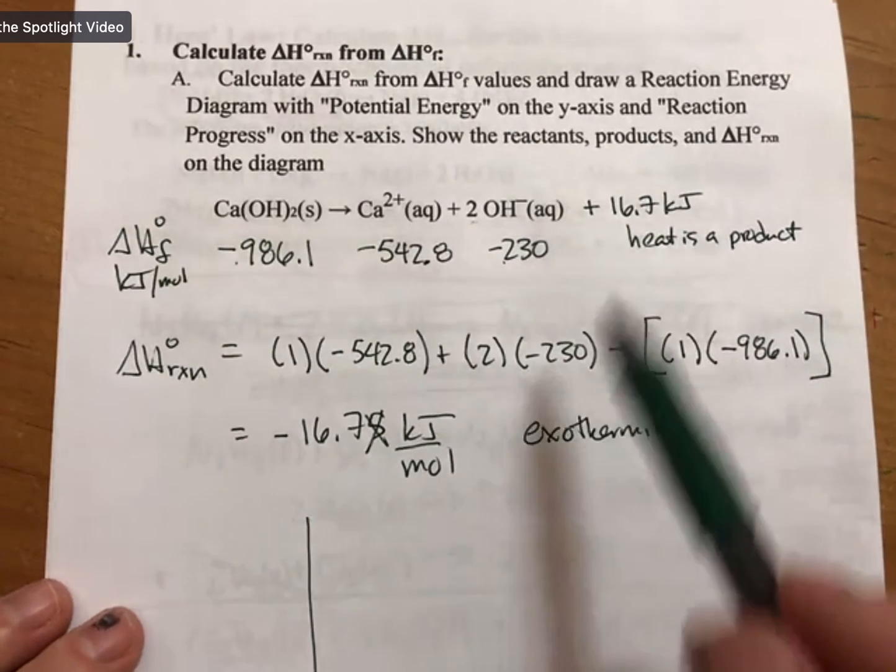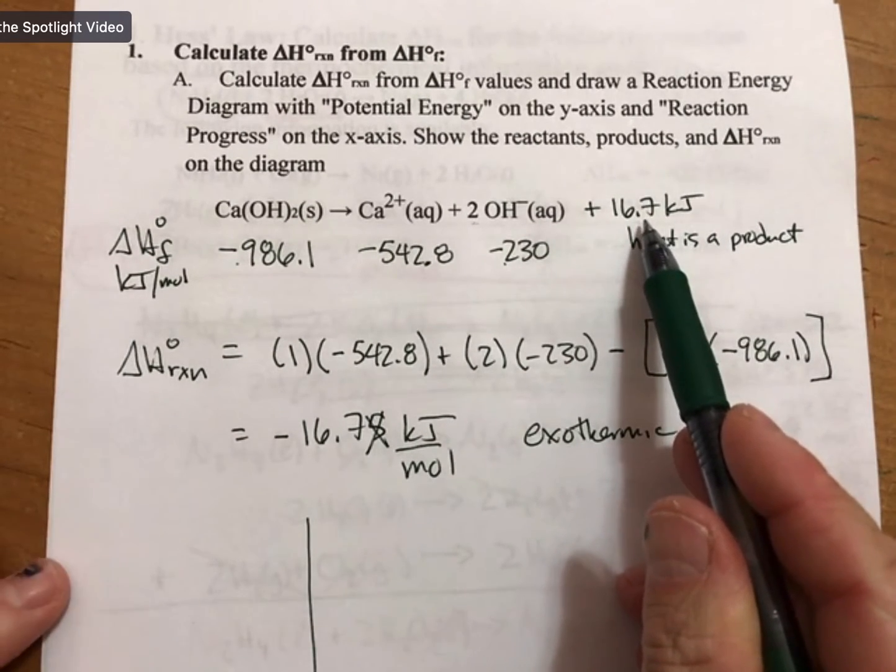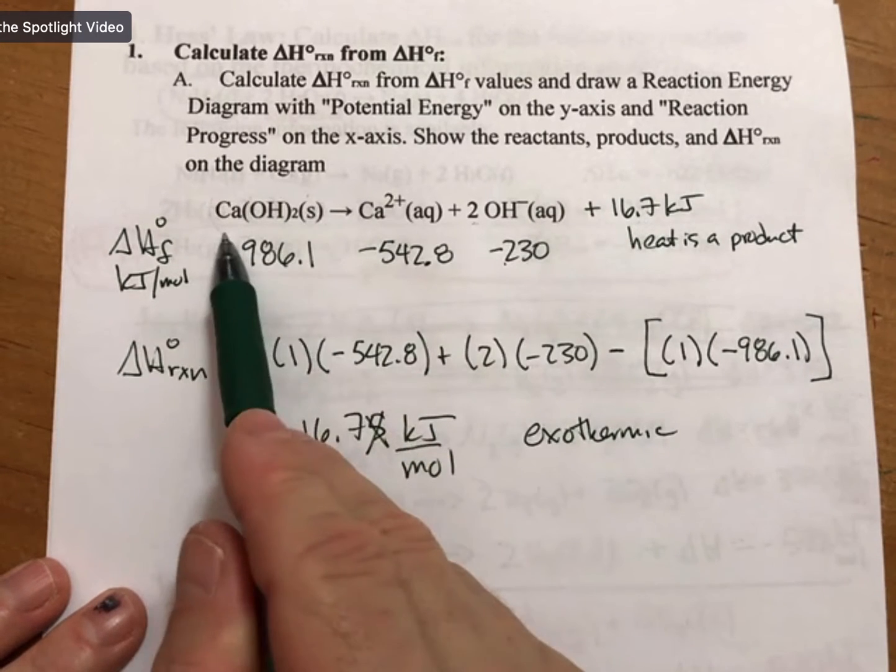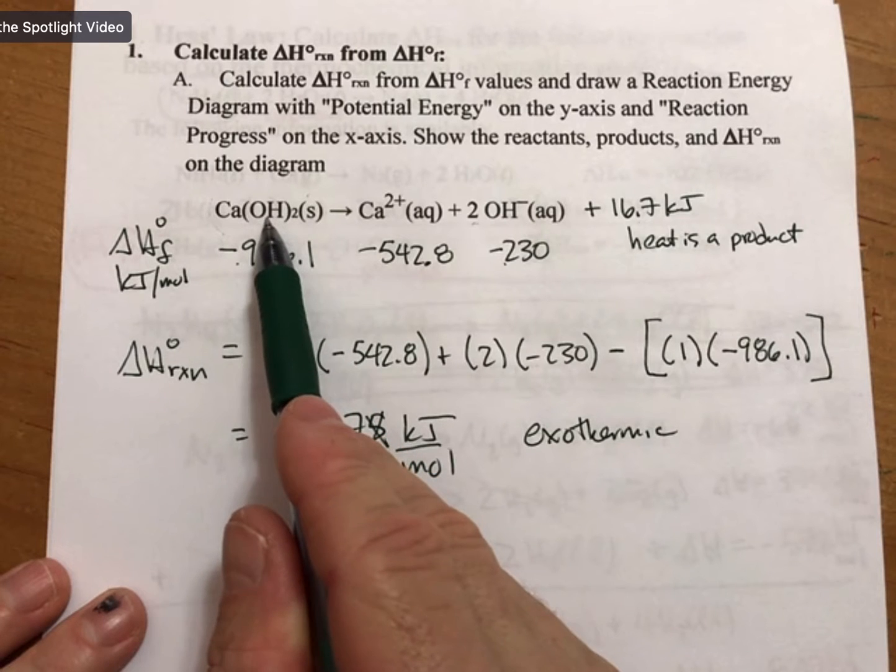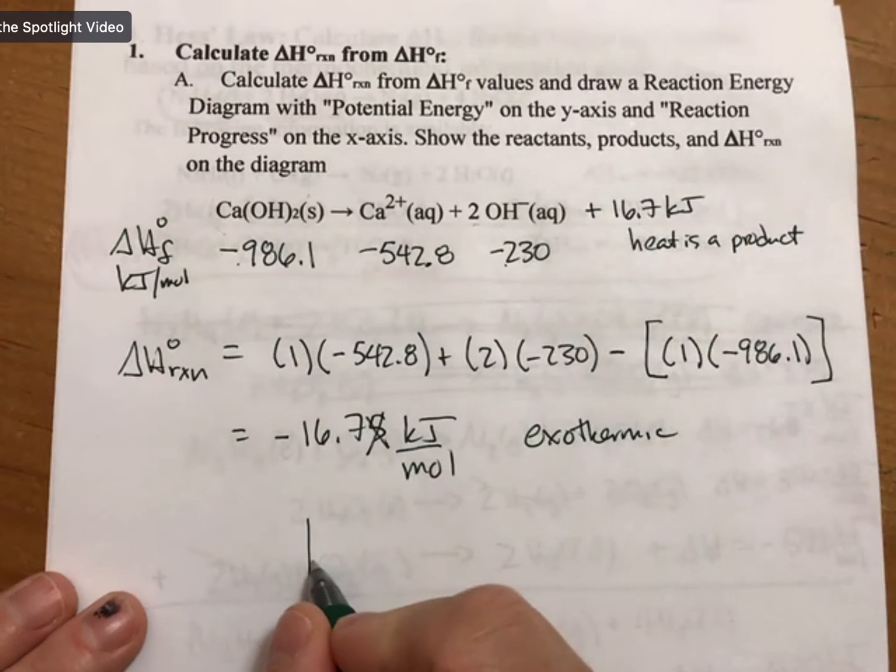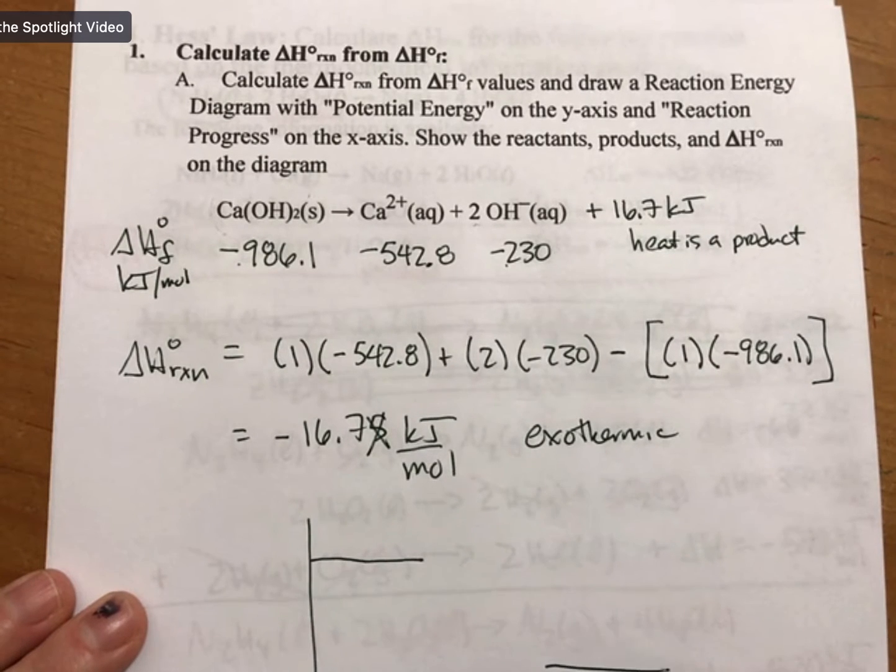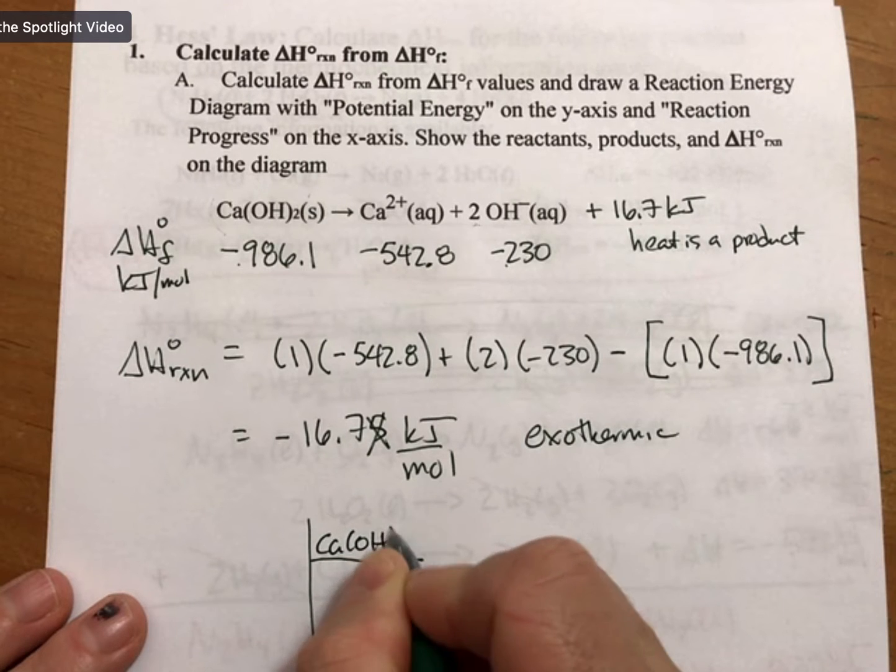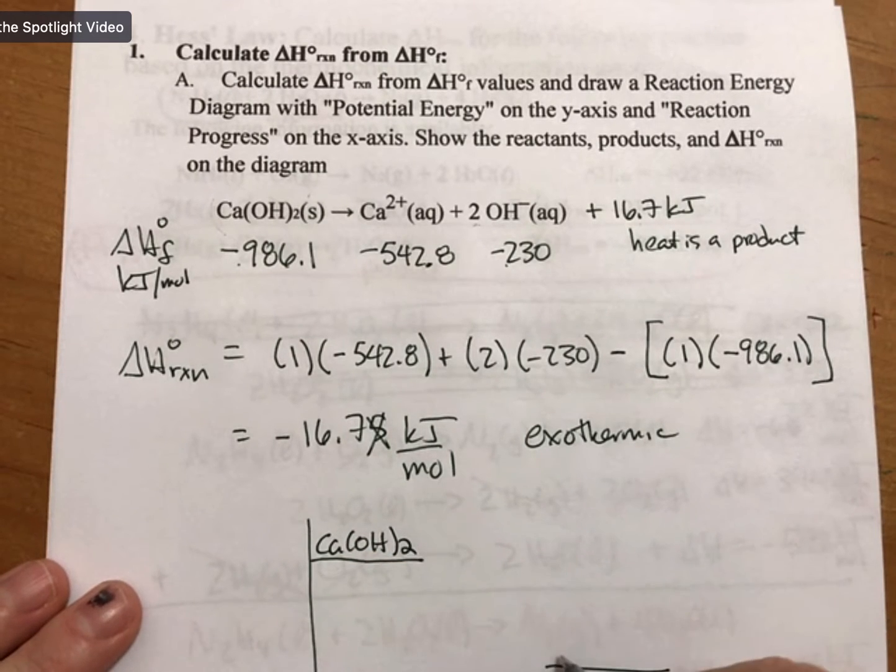And if you look at the energy diagram, this is another way of seeing it. The reactants have the potential energy of the products plus more, so that's another way we know that the reactants are higher for this one and the products are lower.